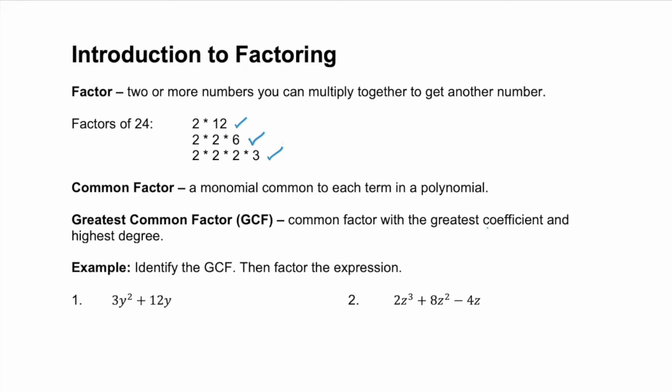Remember that a coefficient is just a number, and the highest degree is talking about the variable. So when we factor something like x or x squared, we want to pull out the largest number of that variable. The degree for x squared is 2.